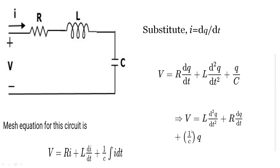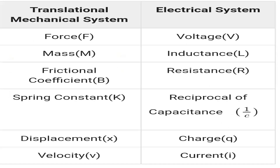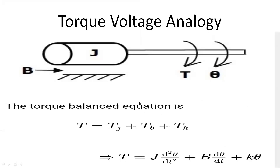By comparing the mechanical and electrical equations, we get the analogous quantities. This table shows that for a translational mechanical system: force is analogous to voltage, mass is analogous to inductance, frictional coefficient is analogous to resistance, spring constant is analogous to reciprocal of capacitance, displacement is analogous to charge, and velocity is analogous to current.